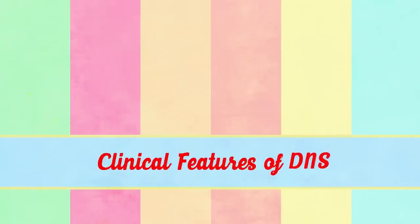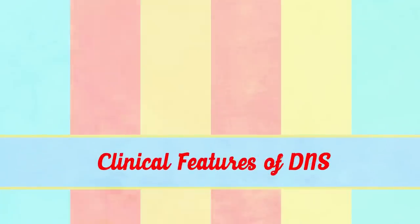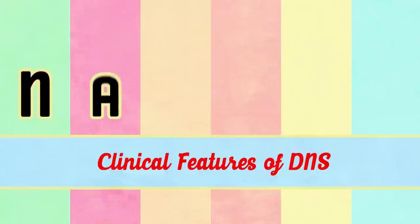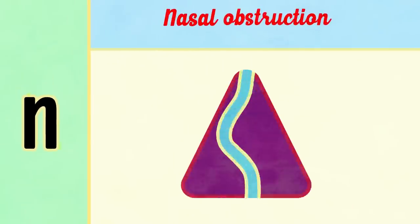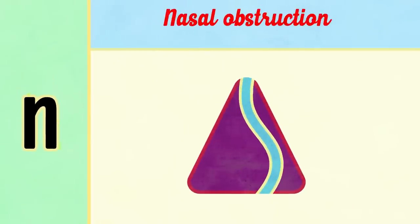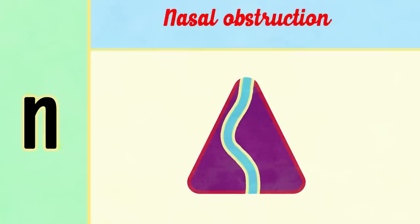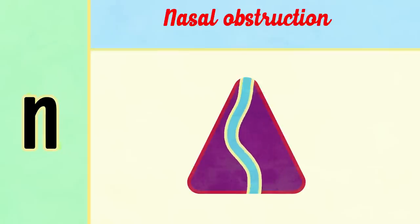Clinical features of DNS can be simply remembered using the mnemonic 'Naseem has DNS.' N is for nasal obstruction. Naturally, any deviation in the nasal septum causes less nasal space and results in nasal obstruction on the side of DNS.